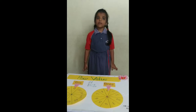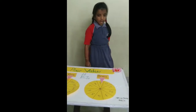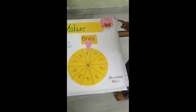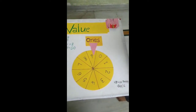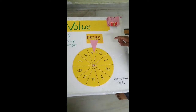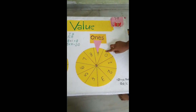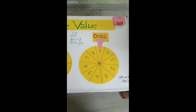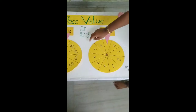The place value of a digit is given by its position in the number. For example, 19. 9 is in the 1's place, so the place value of 9 is 9. 1 is in the 10's place, so the place value of 1 is 10.